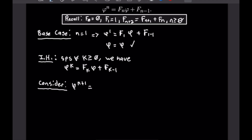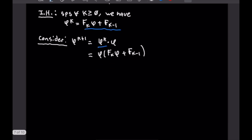We can write φ^{K+1} = φᴷ · φ. Then we make a substitution using our induction hypothesis, giving us φ · (F_K · φ + F_{K−1}). Multiplying through, we get F_K · φ² + F_{K−1} · φ.